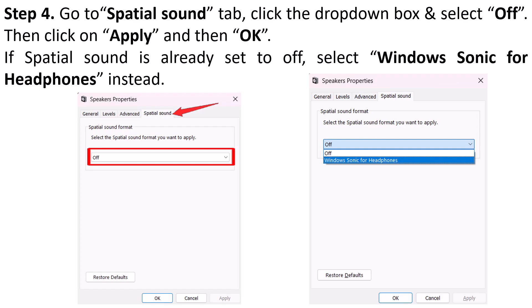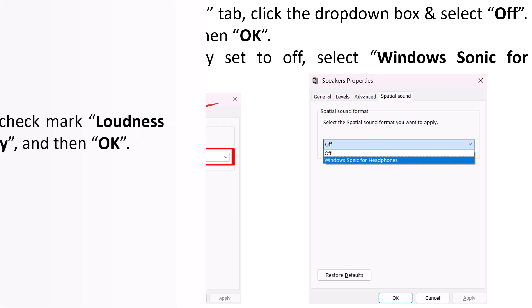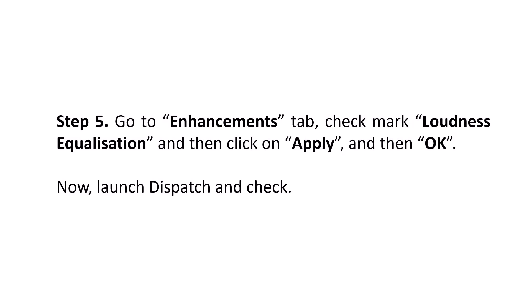Now if the Spatial Sound is already set to Off, then select Windows Sonic for Headphones instead. Now go to the Enhancements tab, checkmark Loudness Equalization, and then click Apply and then OK. Now launch Dispatch and check if your problem is solved or not.